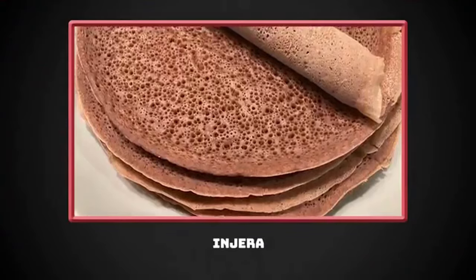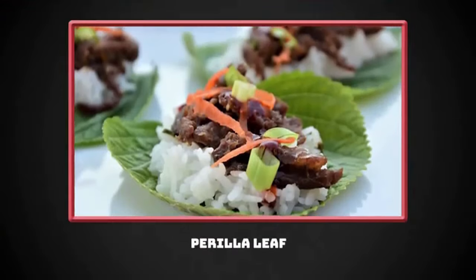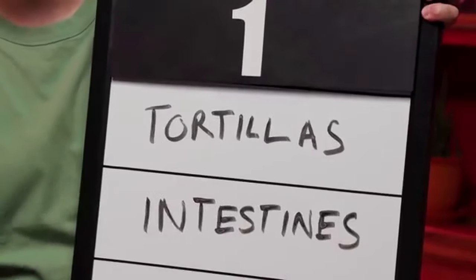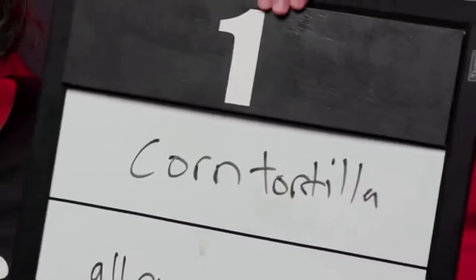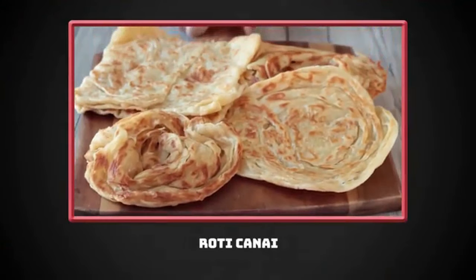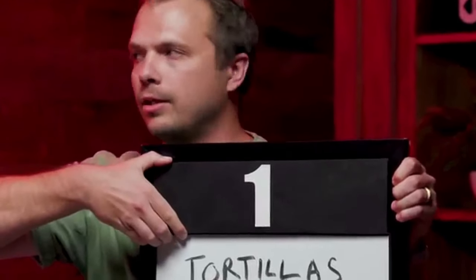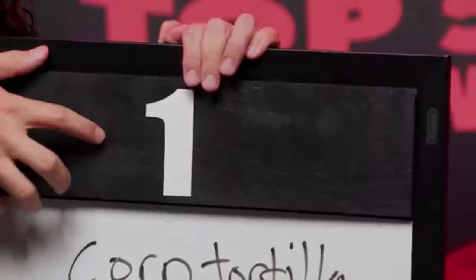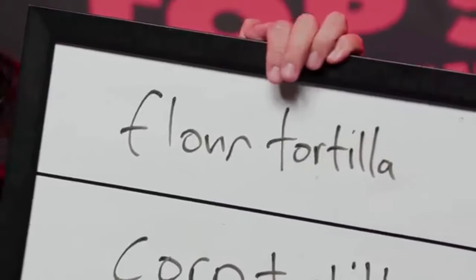Injera — bread in Ethiopian cuisine. The perilla leaf — made popular in Korean barbecue. Dumplings. Sushi rice. Tortillas. And I will also have to reveal my number two is corn tortillas. Roti chai nai — that's Thai restaurants as well as Indian restaurants, it's all over the place. Roti chai nai is the Malaysian version. My number one edible vessel is leaves. Number one is flour tortillas.